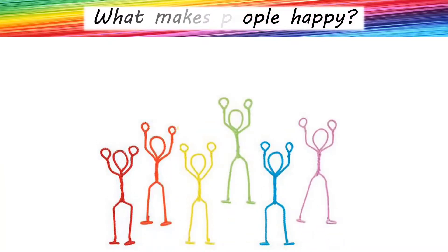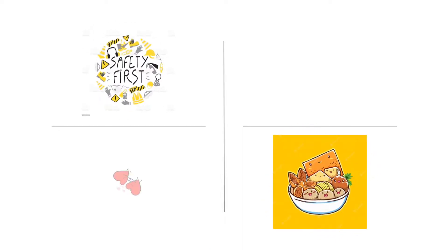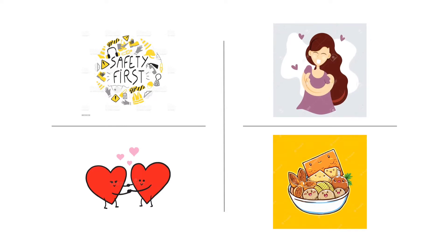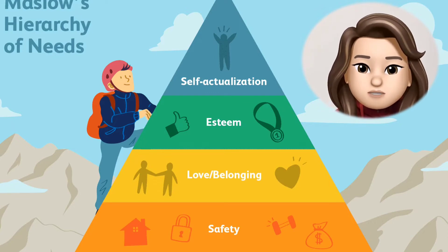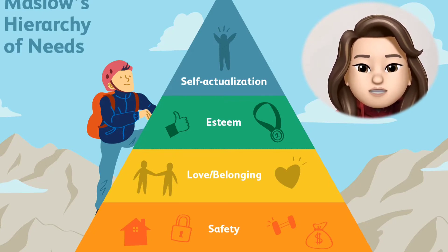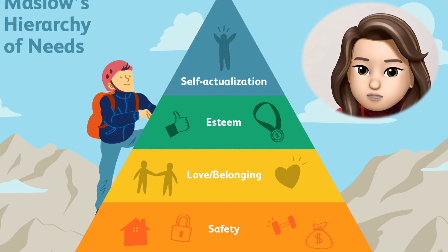Maslow was interested in learning about what makes people happy and the things that they do to achieve that aim. He believed that people have an inborn desire to be self-actualized — that is, to be all they can be. In order to achieve these ultimate goals, however, a number of more basic needs must be met, such as the need for food, safety, love, and self-esteem. We are motivated, according to Maslow, to meet each of the basic needs listed on the hierarchy in order, meaning that before we can think of things at the top of the pyramid — like love, respect, or self-actualization — we have to fulfill lower level needs like immediate and long-term safety.